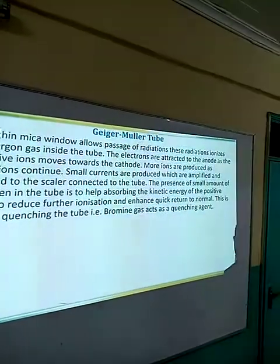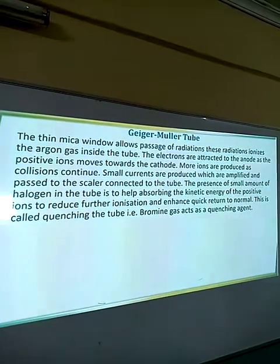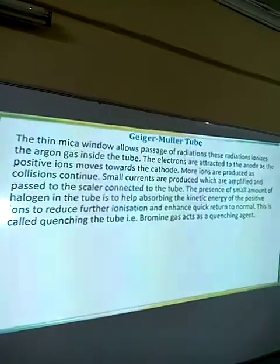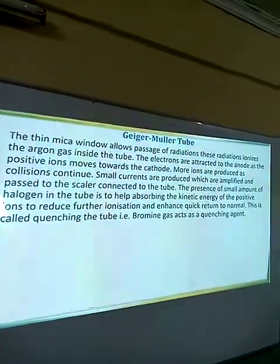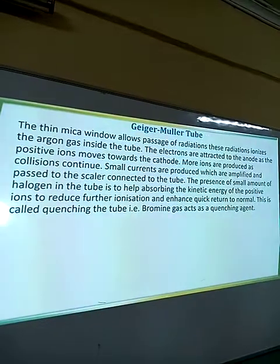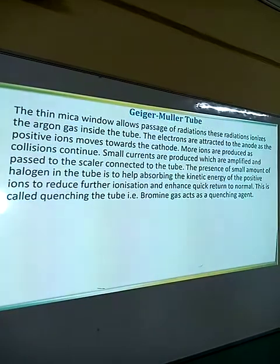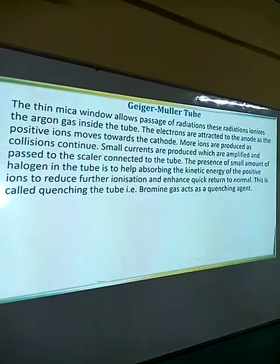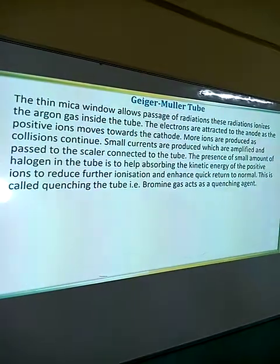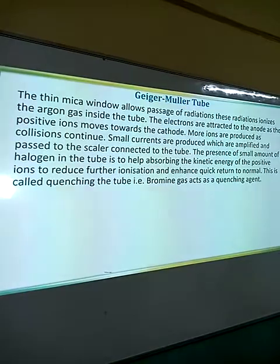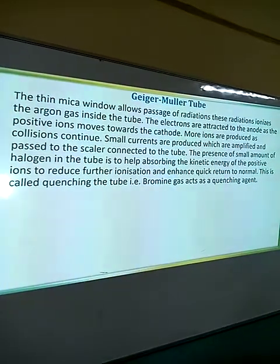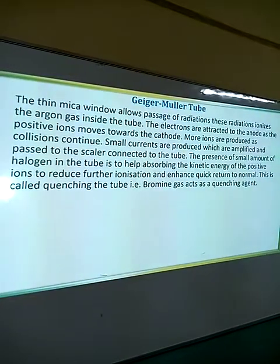A quenching agent helps in absorbing the kinetic energy of the positive ions to prevent or reduce further ionization. The positive ions, as a result of their collisions, would end up producing more ions. So to prevent that and return the system to normal, bromine gas quenches or absorbs this kinetic energy. Bromine gas acts as a quenching agent in this tube. The GM tube can be made more sensitive by connecting it to an amplifier, which increases its sensitivity.